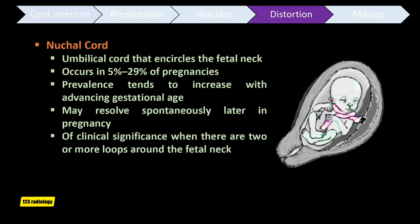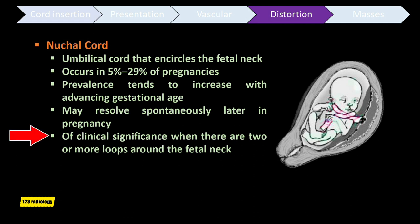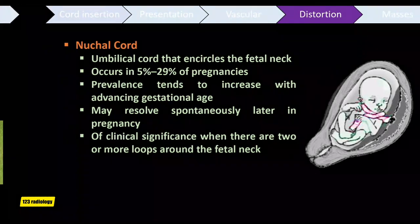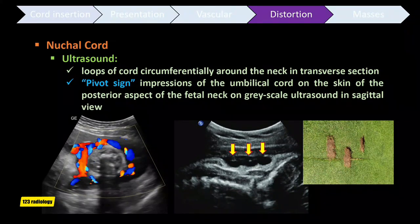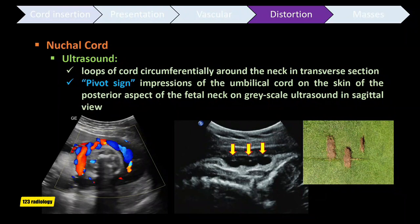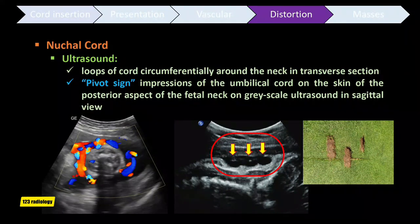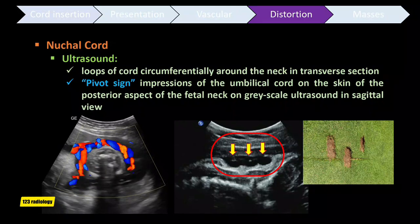Nuchal cord is an umbilical cord that encircles the fetal neck, occurring in 5 to 29% of pregnancies with a tendency to increase with advancing gestational age. It may resolve spontaneously and is clinically significant when there are two or more loops around the neck. On ultrasound, loops of cord are seen wrapping around the neck in transverse section. The pivot sign — impressions of the umbilical cord on the skin of the posterior fetal neck on grayscale sagittal view — is an important ultrasound sign.